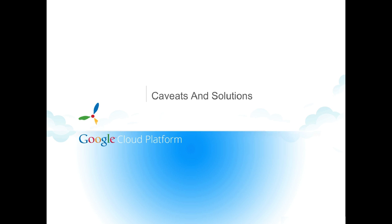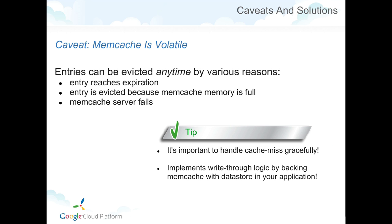Now let's discuss some caveats and solutions. The first caveat is that Memcache is volatile compared with Datastore. If you put something in Memcache, it doesn't mean you can get it back later. The entry may have reached its expiration, the Memcache may be full causing old data to be evicted, or the Memcache server might crash and you lose all data. It's therefore very important to handle cache misses gracefully. If you need persistence, you can implement write-through logic backing Memcache with Datastore — which is exactly what Objectify and NDB do.